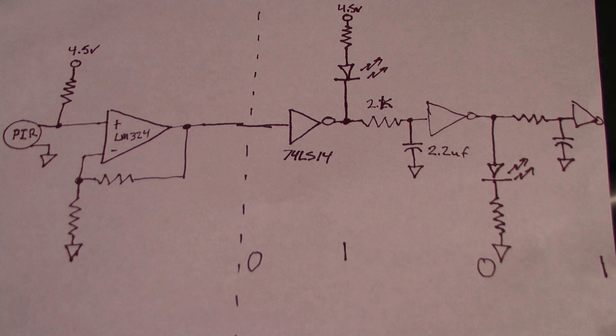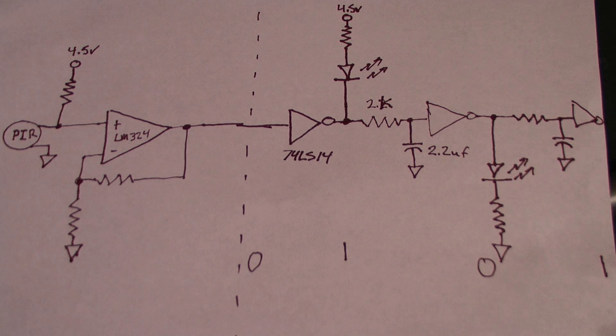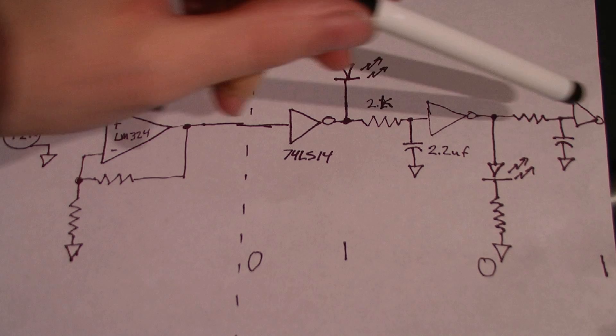So the circuit begins with a PIR motion sensor and an op-amp circuit. You can get this circuit from a previous video that I did about motion activated art. I'll be sure to leave a link in the description box. I just recycled this from that project.